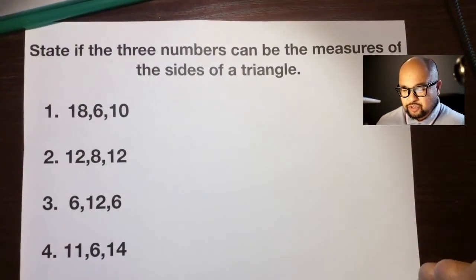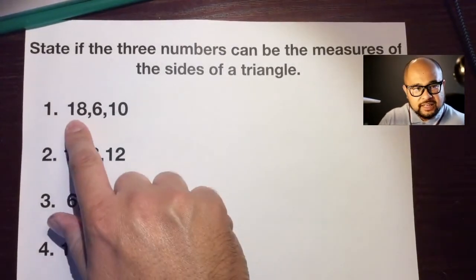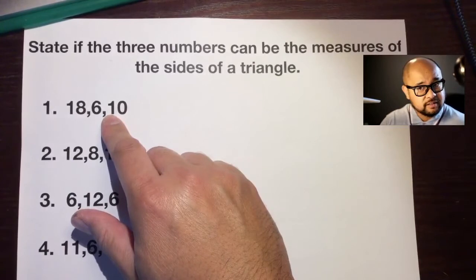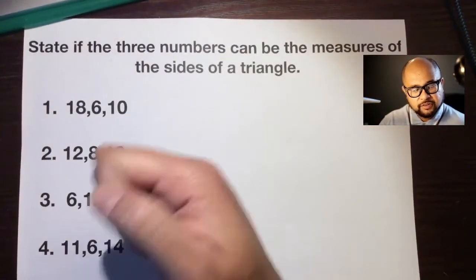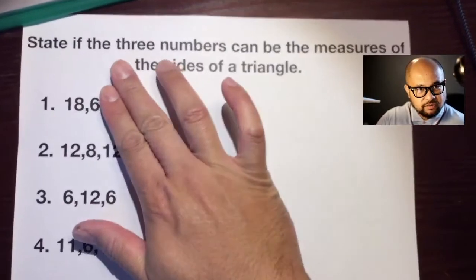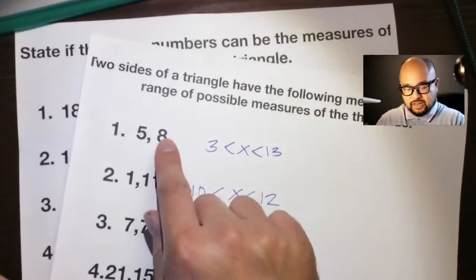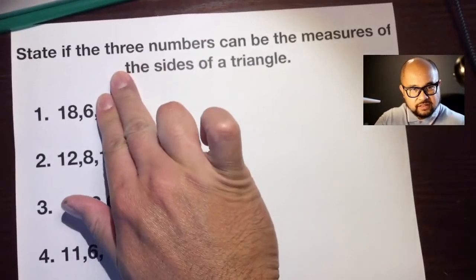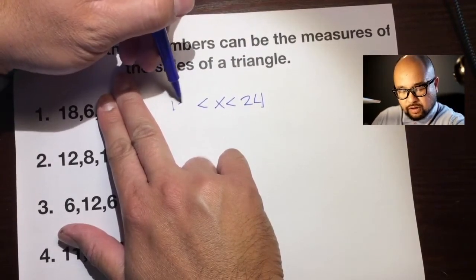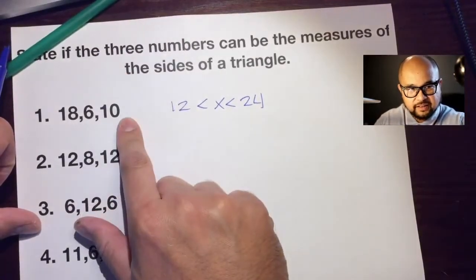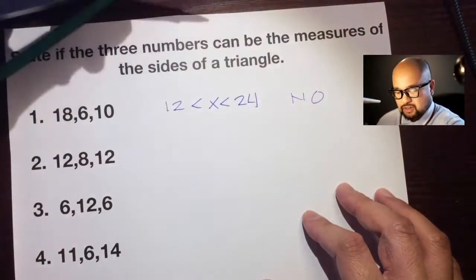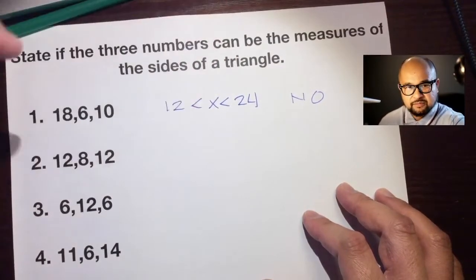Now, part two: state whether these three side lengths can be the measures of the sides of a triangle. If the sides were 18, 6, and 10, would these create an actual triangle? Here's how you do it: just ignore the third side. Focus on two sides — 18 plus 6 is 24, and 18 minus 6 is 12. Now look at that third side: 10. Is 10 in between 12 and 24? No. So can this be a triangle? No — 10 is not in between 12 and 24.